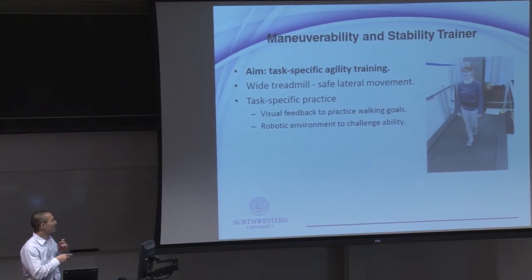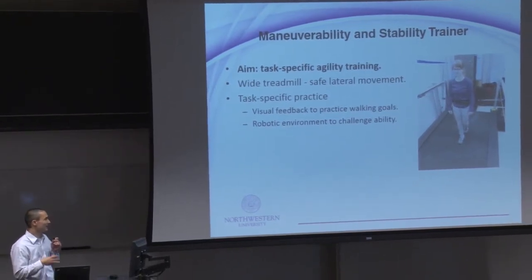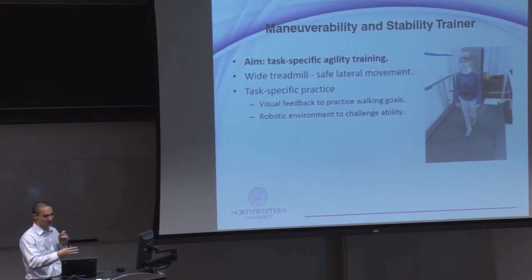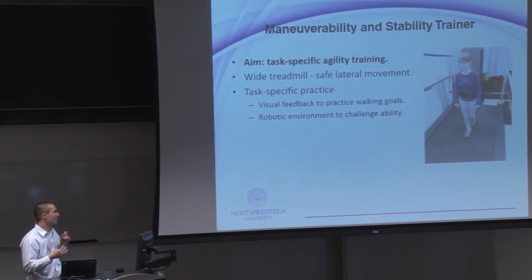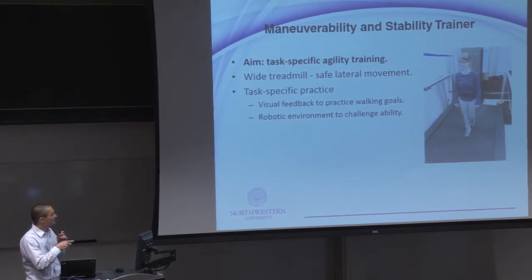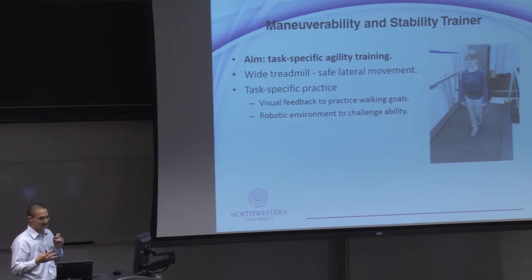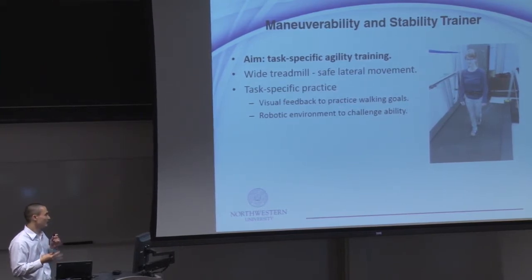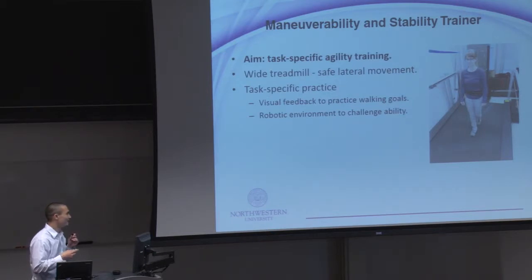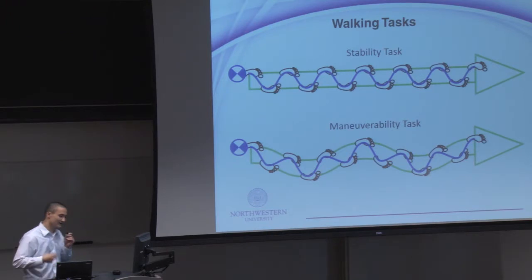To do this, we have a wide treadmill that's approximately four and a half feet wide by eight and a half feet long. And it allows the person to safely make lateral movements while they are walking. And we are also developing a visual feedback display that is able to present to the subject various walking goals. We're also developing a robotic environment that can challenge their stability and maneuverability. This consists of ropes that are attached to the patient by means of a hip belt and routed through a system of pulleys. And eventually connected to a motor that is on a magnetic rail, which is in front of the patient here.